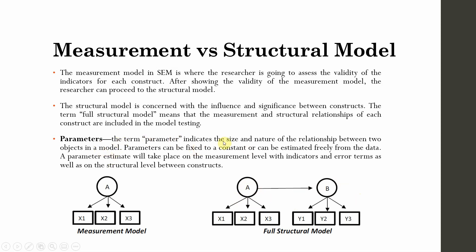Parameters. The term parameter indicates the size and nature of relationship between the two objects in the model. Parameter can be fixed to a constant or can be estimated freely from the data. A parameter estimate will take place on the measurement model with indicators and error terms as well as on structure level between constructs.